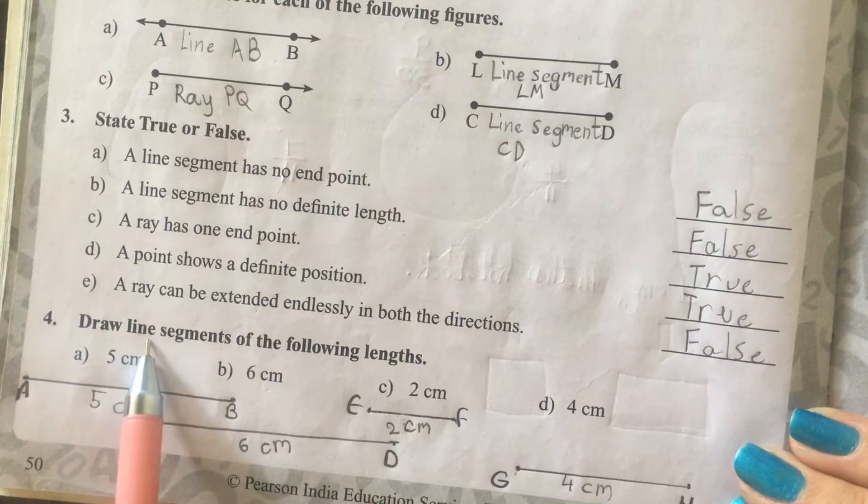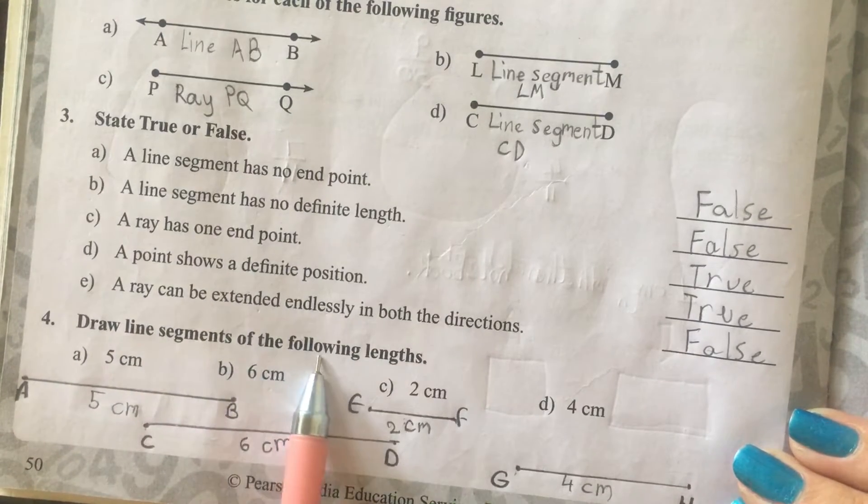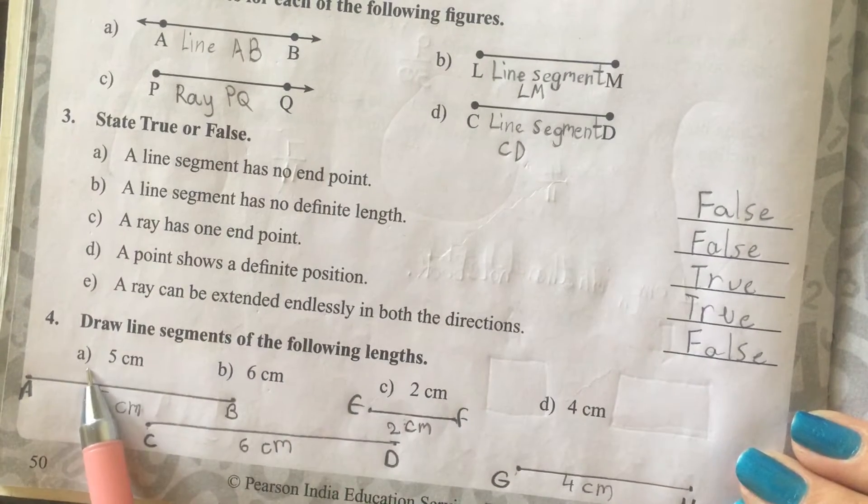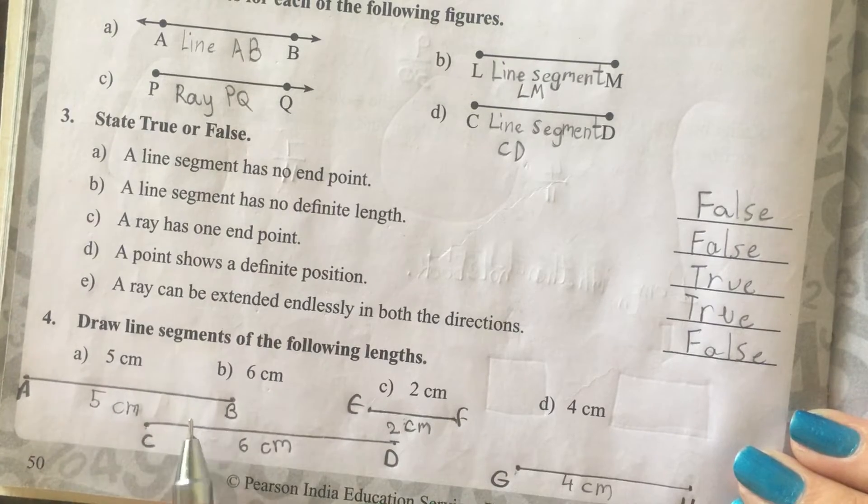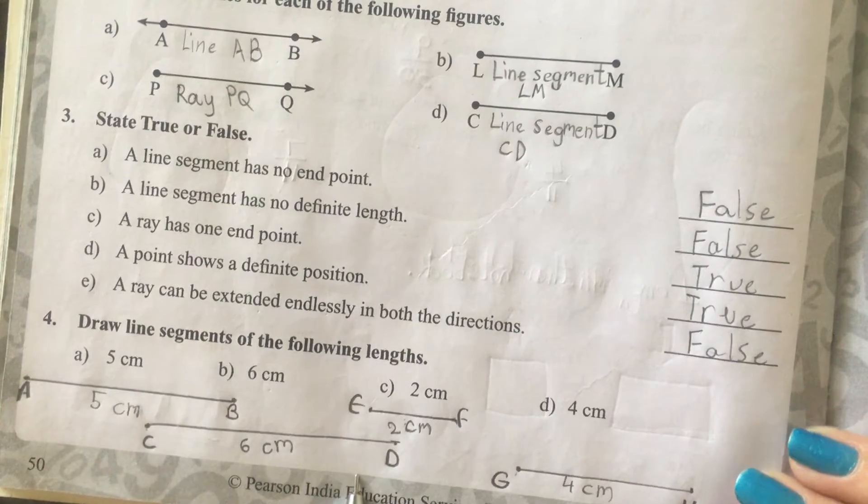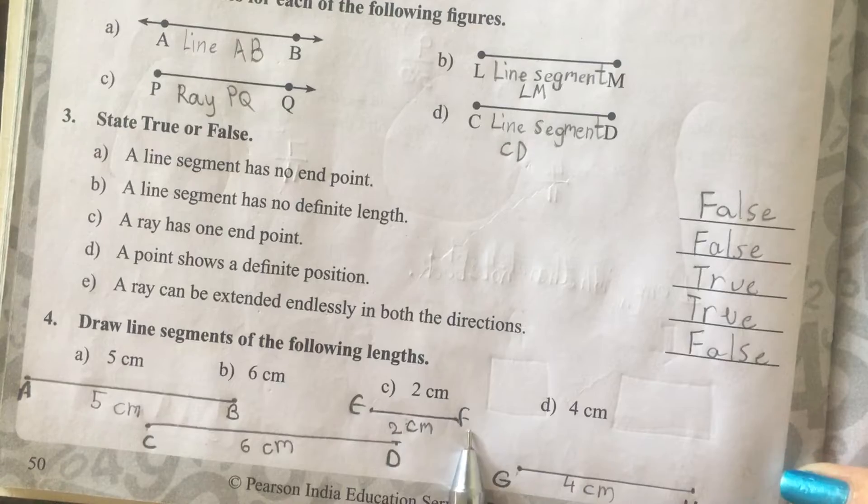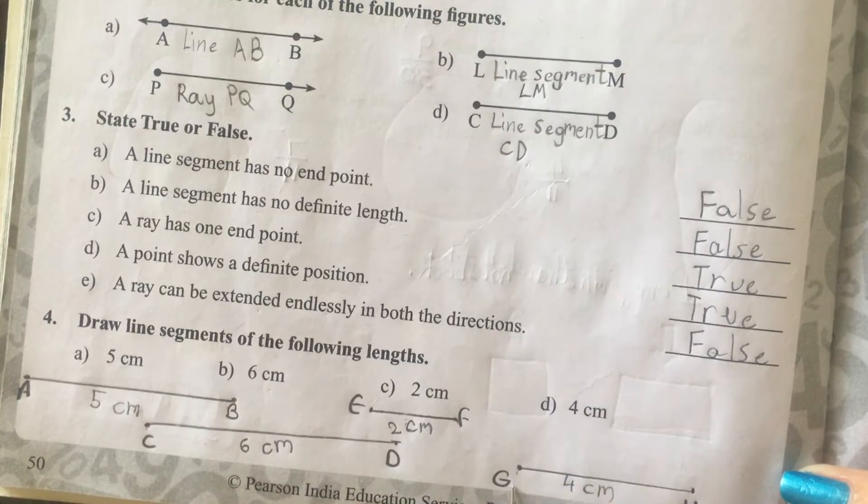4. Draw line segments of the following lengths. A is 5 cm. B is 6 cm. C is 2 cm. And D is 4 cm.